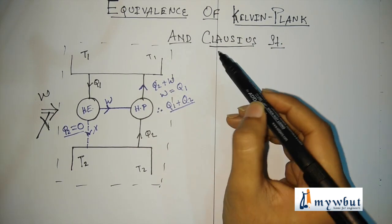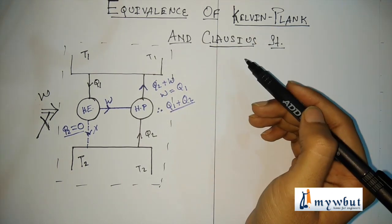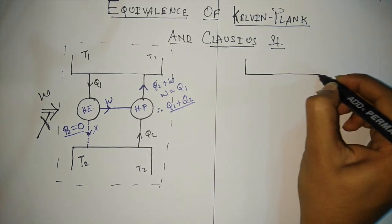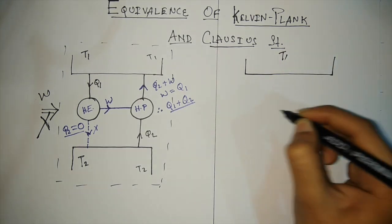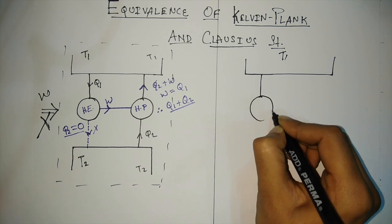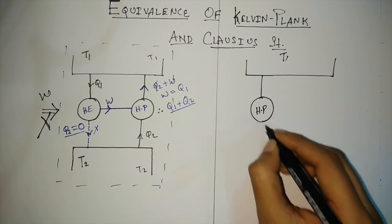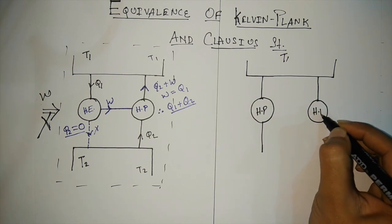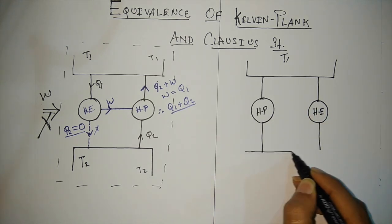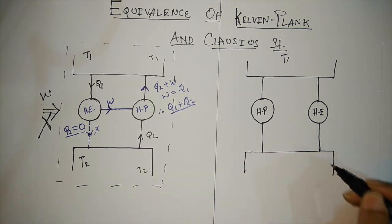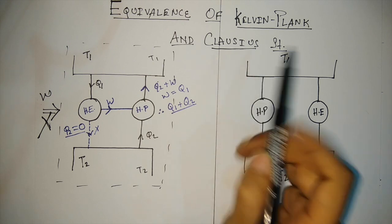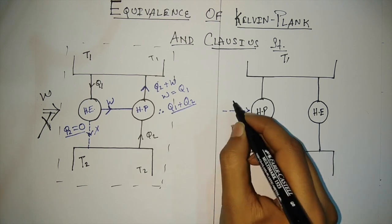Now let us prove the equivalence of the Clausius statement with respect to the Kelvin-Planck statement. Drawing the same diagram with the source at temperature T1, a heat pump, a heat engine, and a sink at temperature T2 — let us now assume the Clausius statement to be wrong, that is, the work input is zero.